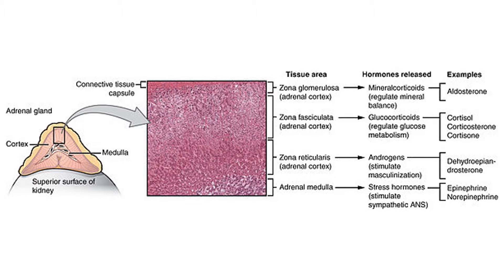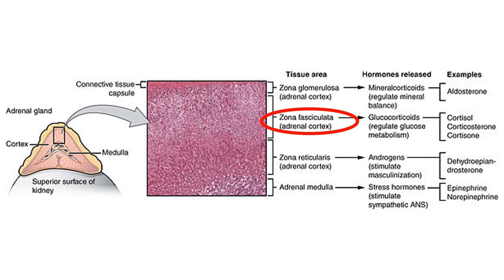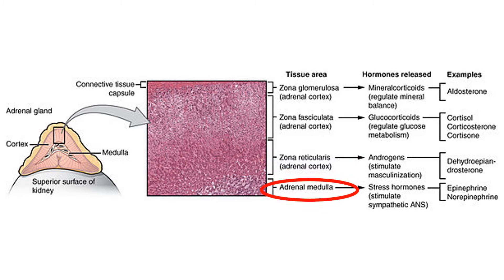The cortex is actually made up of three zones. There's the zona glomerulosa, which releases mineralocorticoids like aldosterone, which you can see listed on the diagram. There's the zona fasciculata, which releases glucocorticoids like cortisol, and the zona reticularis, which releases androgens like dehydroepiandrosterone. Then, separate to the cortex, you have the innermost layer, the medulla, which is responsible for secreting stress hormones such as adrenaline.